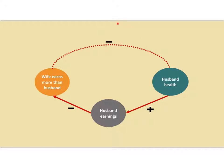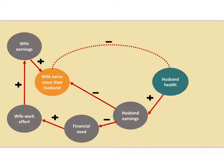That is consistent with the evidence. But there are more effects from husband's health. If the husband's health is poor and he's not earning very much, that increases the couple's financial need, which will cause the wife to work more — maybe more hours, maybe a more serious job — increasing her earnings. That also means it's more likely she earns more than her husband. So this is another reverse causation path: bad health leads to low earnings, increases financial need, increases wife's work effort, increases her earnings relative to his.